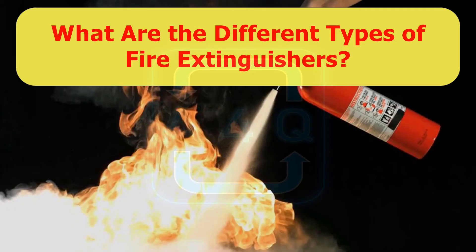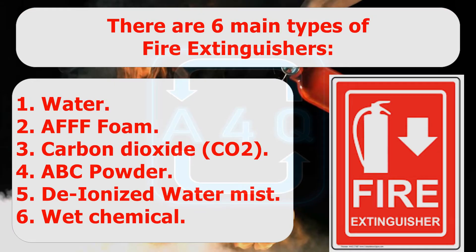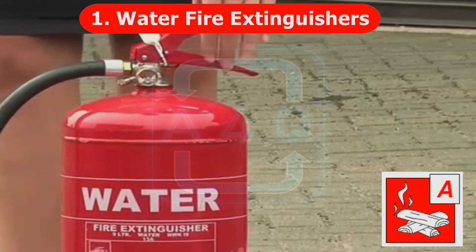There are six main types of fire extinguishers: 1. Water, 2. AFFF Foam, 3. Carbon Dioxide (CO2), 4. ABC Powder, 5. Deionized Water Mist, 6. Wet Chemical.